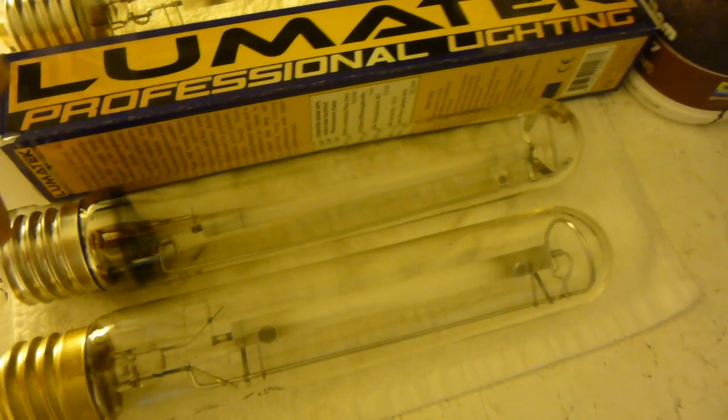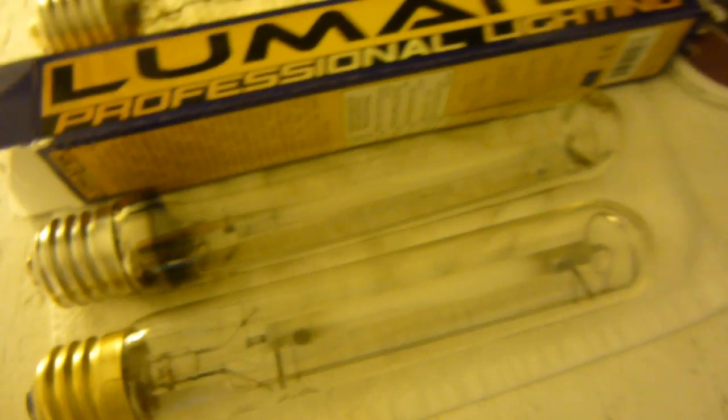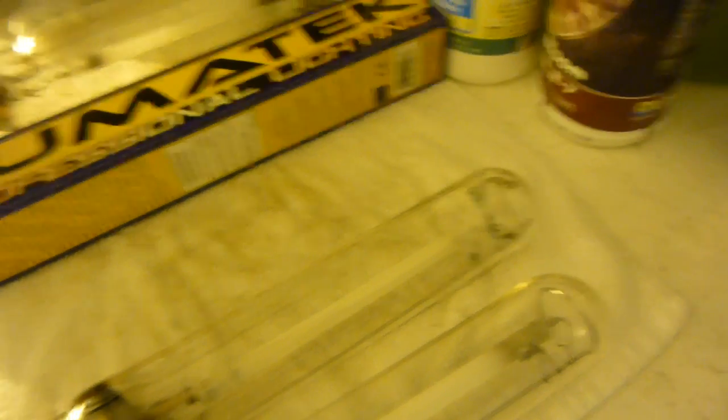Always check your bulbs before, especially if you're buying them in town at a grow shop. Don't take it as an insulting thing, just check the bulb because you're paying over 100 dollars for the bulb if you're buying it at a grow shop. Check the bulb and make sure it's good. If it's got any kind of dark spots like that, it's been used, don't buy it. Buy your bulbs online, will save you 50 to 80 percent, and buying them from a reputable dealer online will ensure that you're saving 50 to 80 percent and also getting a brand new bulb at the same time.